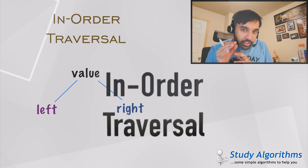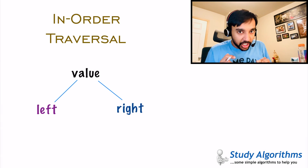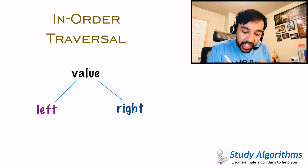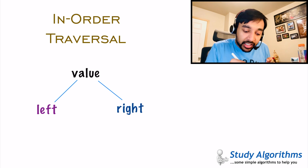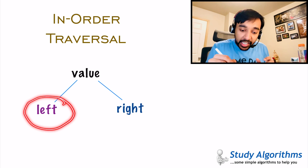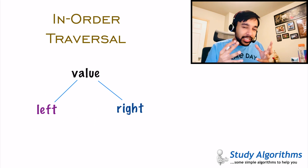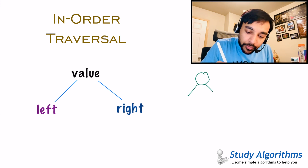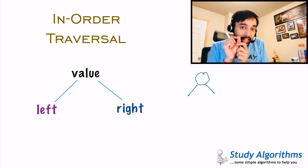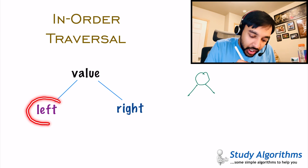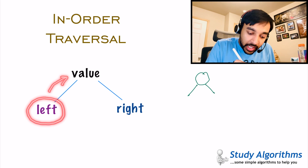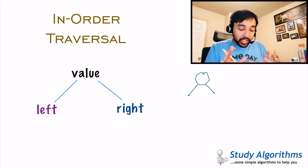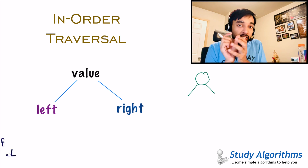To get started with in-order traversal, you need to understand the basic structure of any node in a binary tree. Every node has some value, a left child, and a right child. Even a complete tree has this structure — a root node, a left subtree, and a right subtree. This is a recurring property throughout the entire tree. Given this node structure, an in-order traversal says: first look in the left direction, then go to your value, then go towards the right node. First left, then the value, then the right node.